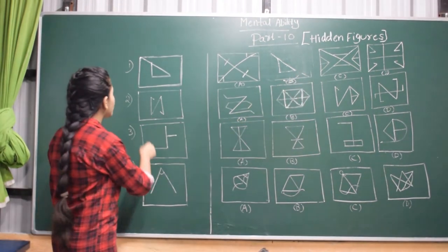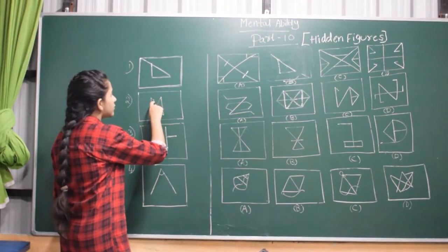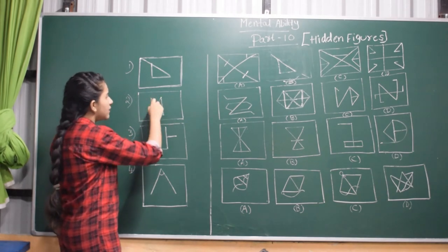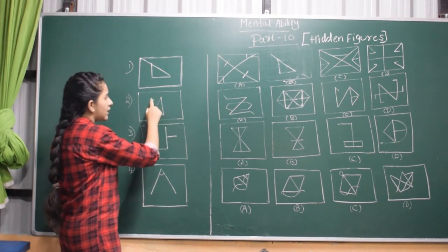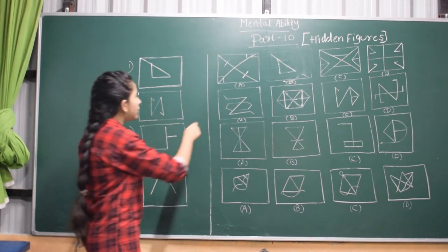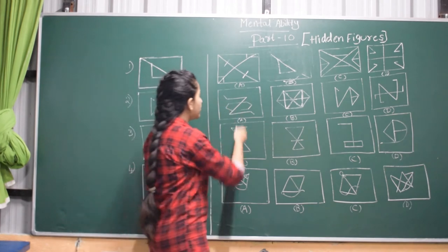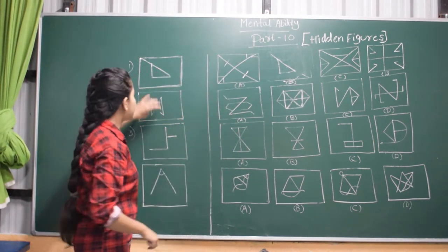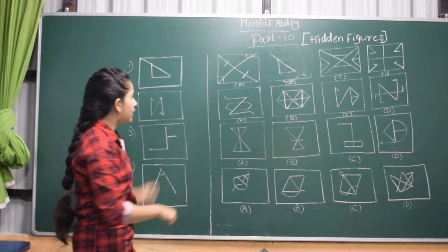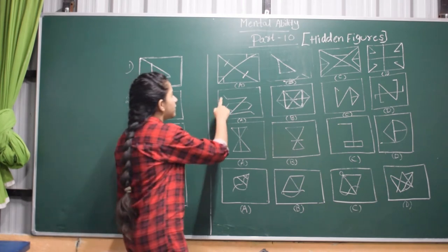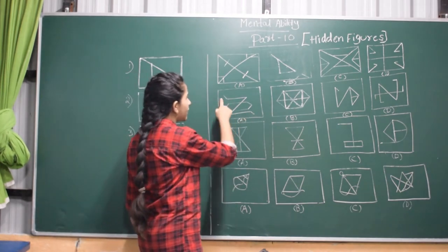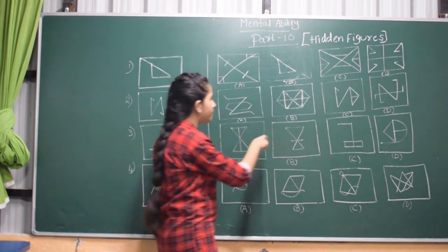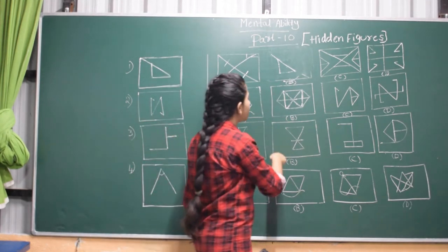Now let's move on to the second question. In this question, as you can see, there is an N shape and there are two lines at both the ends. If we go to the first option, you may think this is the answer because the N is tilted. But if you see the lines at the edges, they are not inwards but they are outwards. So this is not the answer.